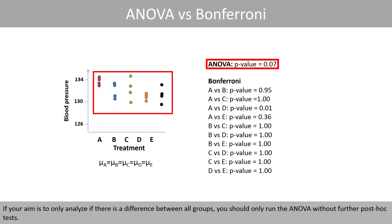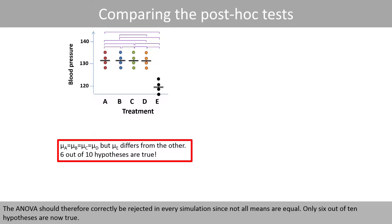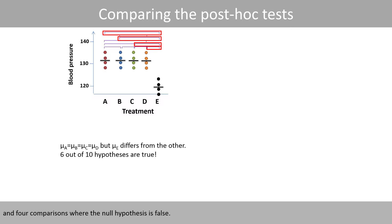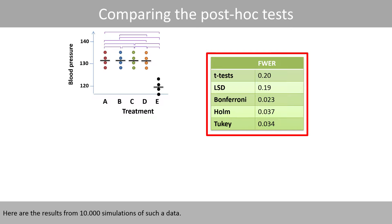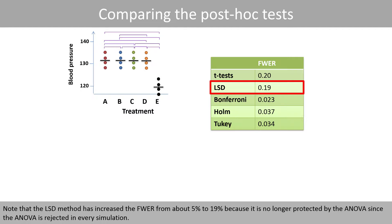If your aim is only to analyze whether there is a difference between all groups, you should run the ANOVA alone without further post-hoc tests. We now run a simulation where groups A, B, C, and D have equal means, but group E clearly differs from the others. The ANOVA should therefore be correctly rejected in every simulation since not all means are equal. Only 6 out of 10 hypotheses are now true. Out of the 10 comparisons, only 6 involve simulated data where the null hypothesis is true, and 4 where it is false. The family-wise error rate has been reduced from 28% to 20% because only 6 out of 10 hypotheses are now true. Note that the LSD method has now increased the family-wise error rate from about 5% to 19% because it is no longer protected by the ANOVA, since the ANOVA is rejected in every simulation.